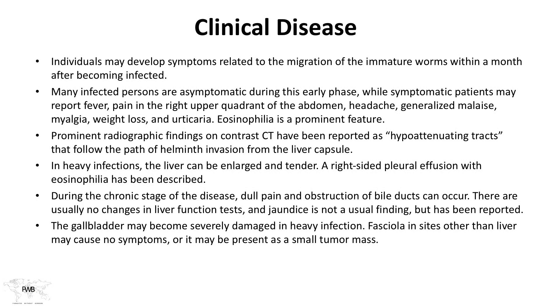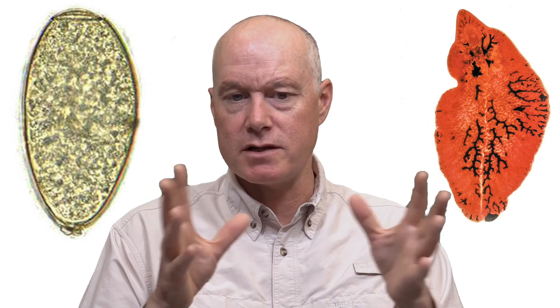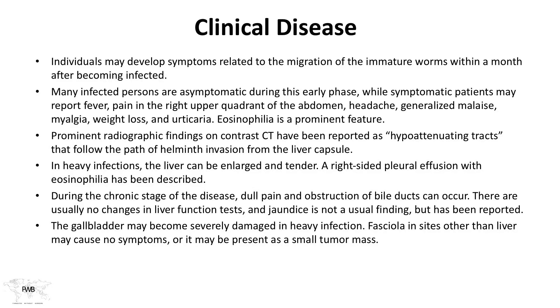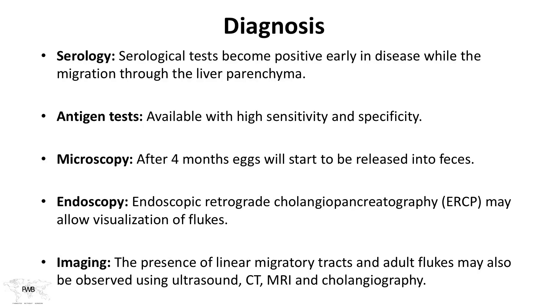During the chronic stage of the disease, dull pain and obstruction of the biliary ducts can occur. There are usually no changes in liver function tests and jaundice is not a usual finding, though it has been reported. The gallbladder may become severely damaged in heavy infections, and fasciae at sites other than the liver can cause symptoms or may be asymptomatic.